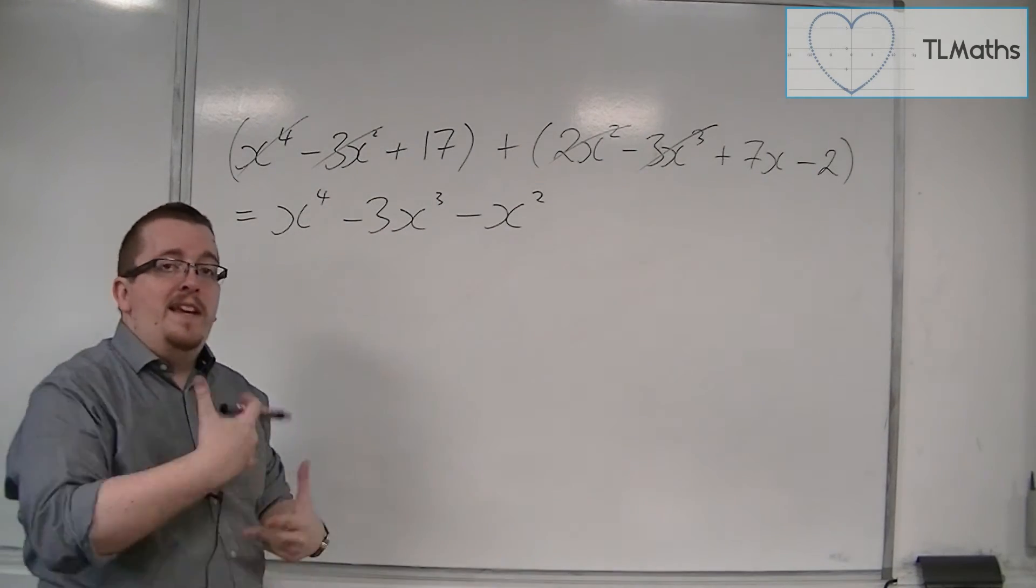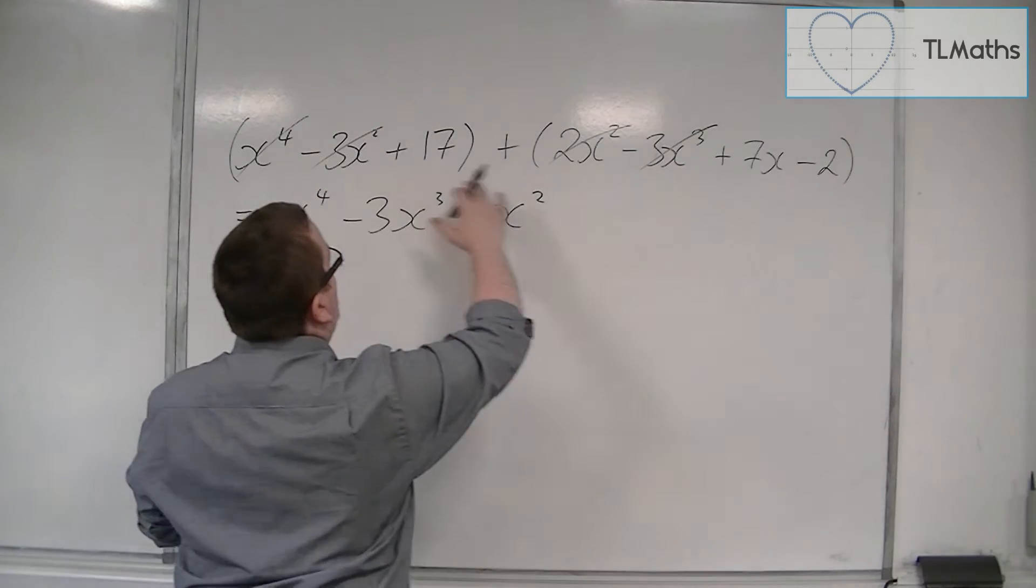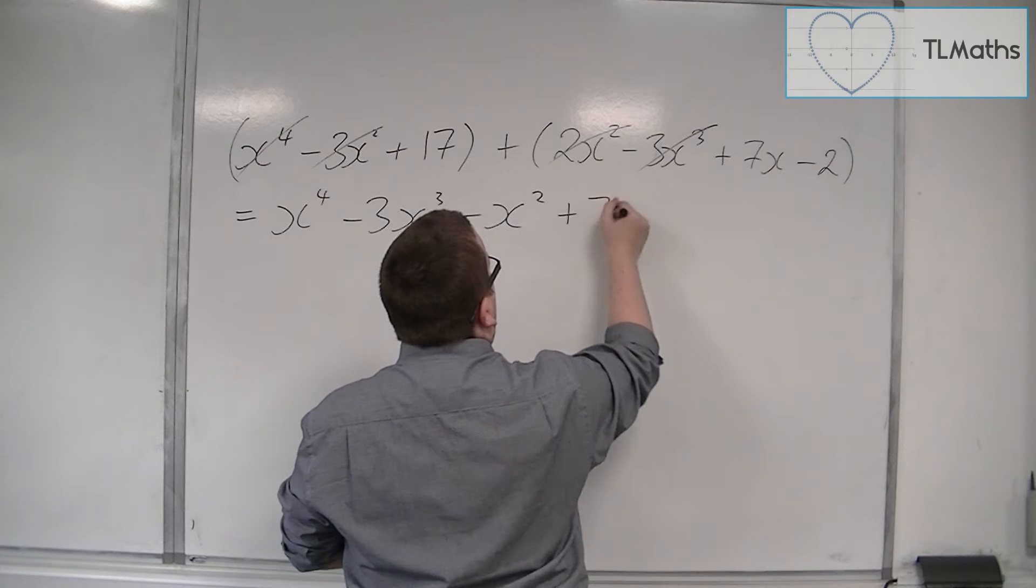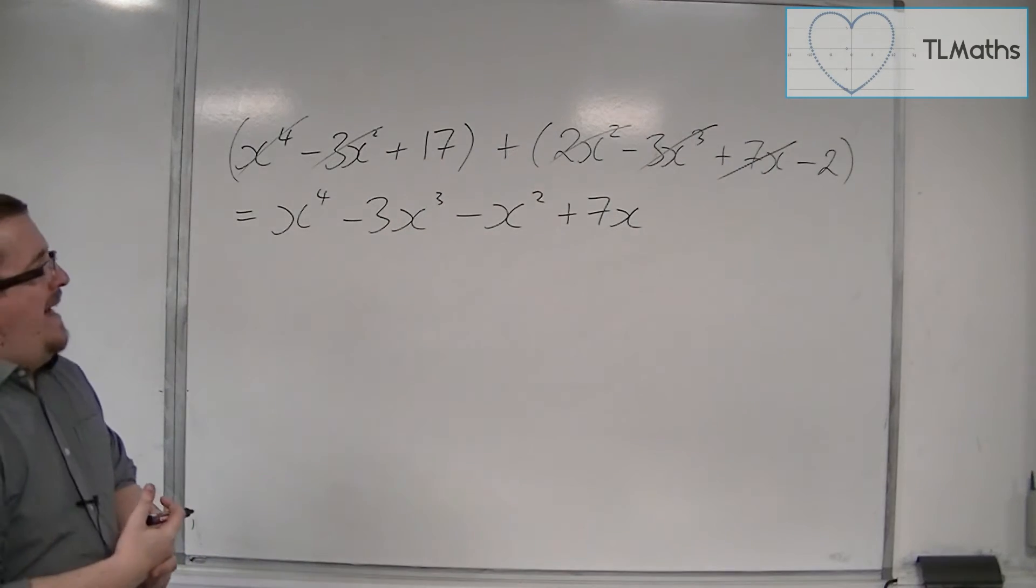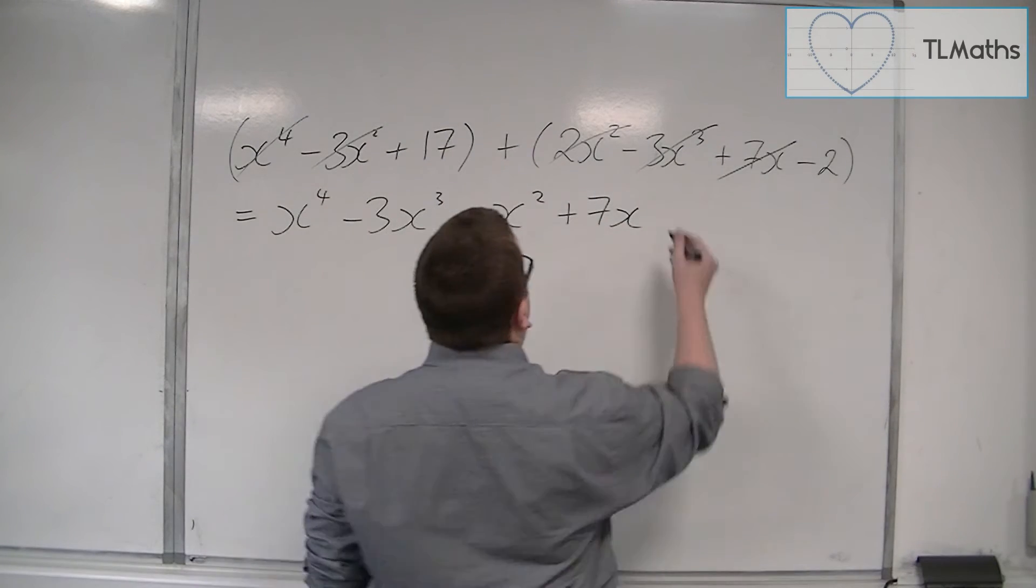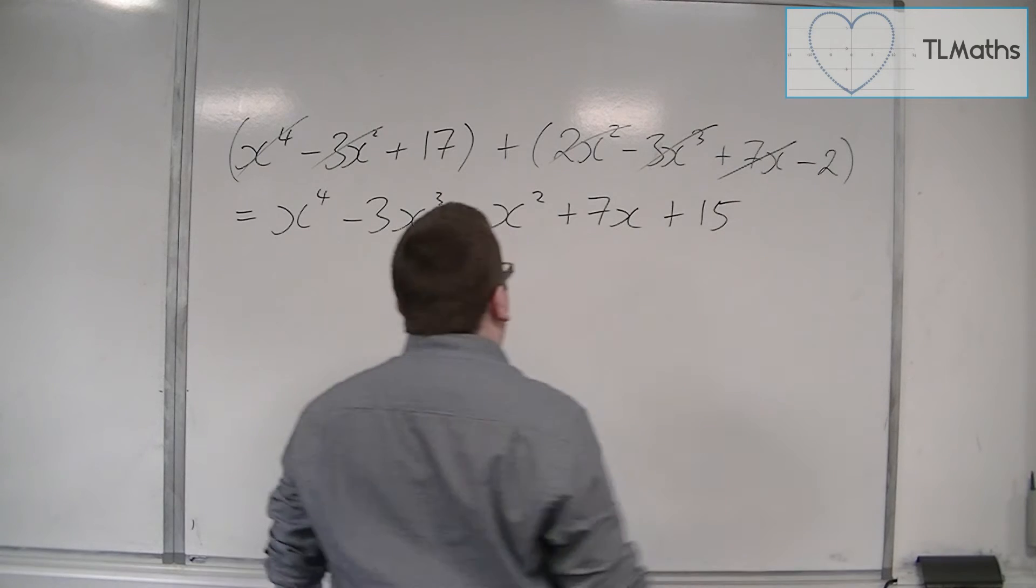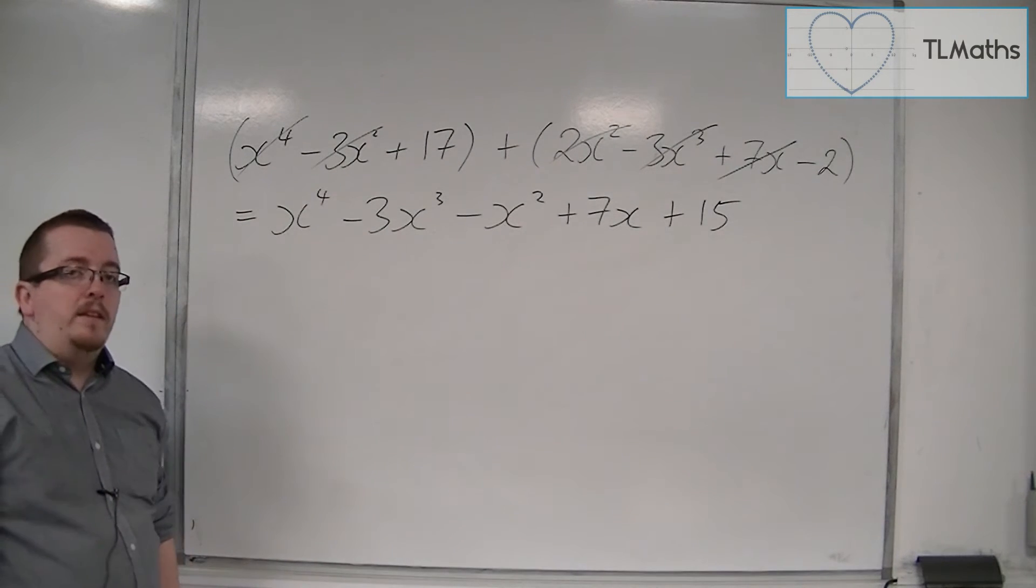Then we're going to have linear terms. So let's look for singular x's. There's only one there, so we've got 7x, so that's going to be plus 7x. And then finally, we've got 17 and take away 2, so that's 15. And that is us combining these two fractions together by adding them.